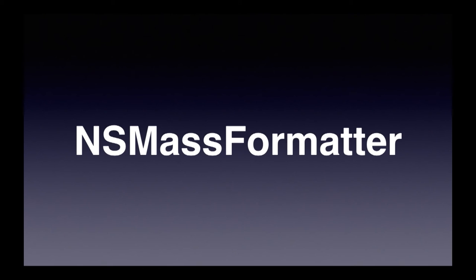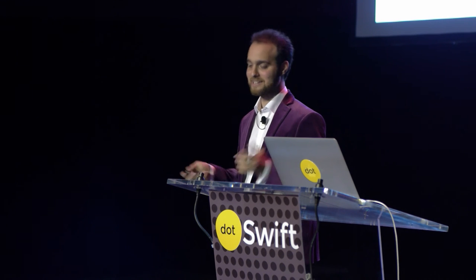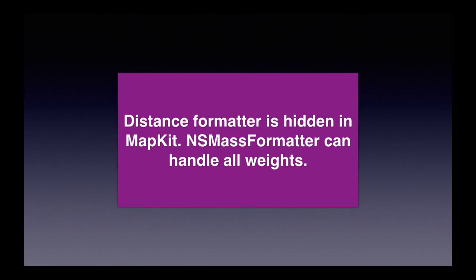For mass, there's NSMassFormatter, introduced in iOS 9. It's smart — you can even tell it whether you want the weight of a person versus the weight of a thing, and it knows how to handle the formatting. So: distance formatter hidden in MapKit, mass formatter can handle all the weights.